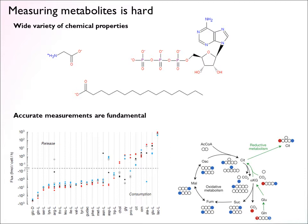At the same time, accurate measurements are fundamental. We have looked at things like measuring uptake and release fluxes, trying to do flux analysis based on isotopes and isotopomers. In order to do any of this, we have to be able to measure metabolites in an accurate way first. So how do we do that?